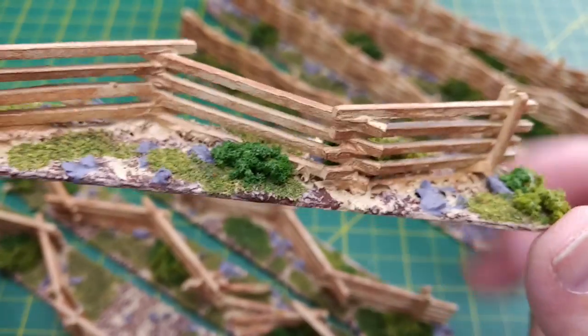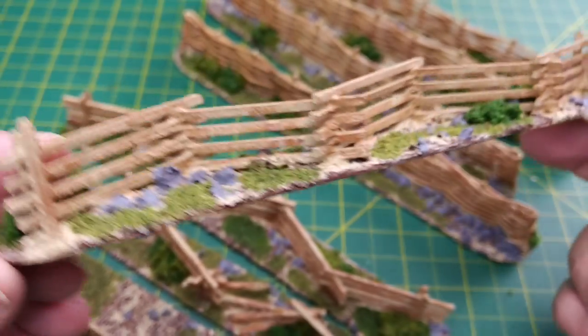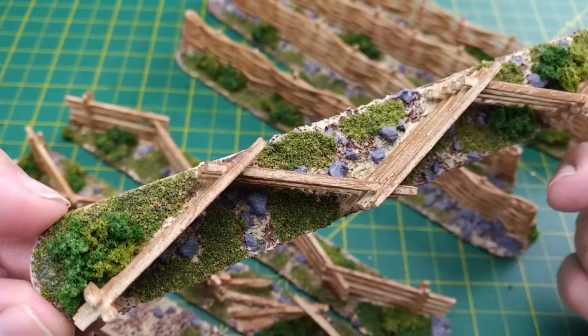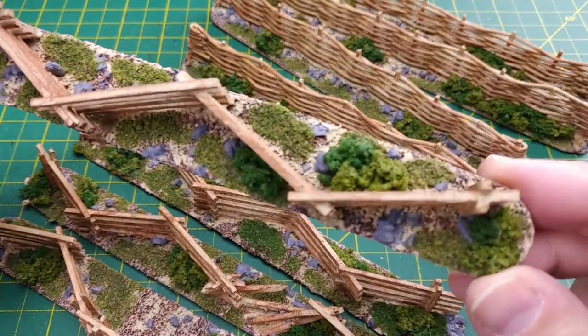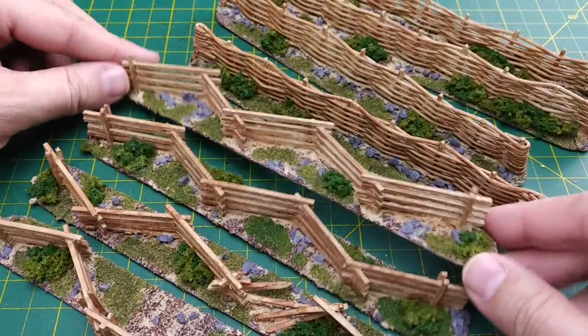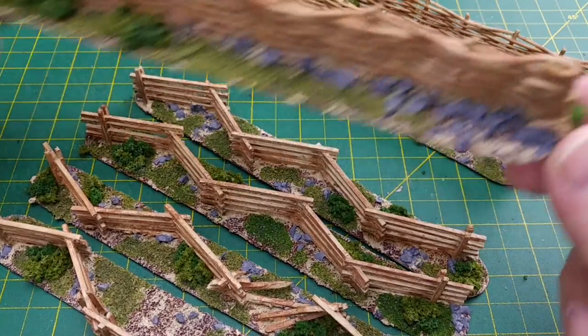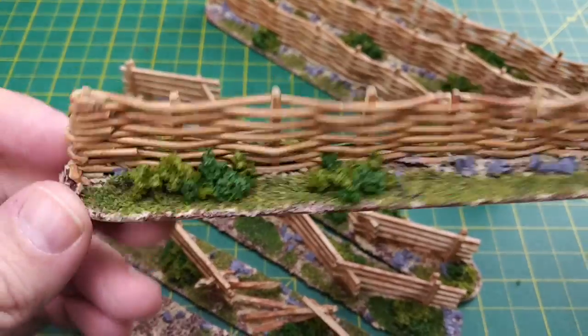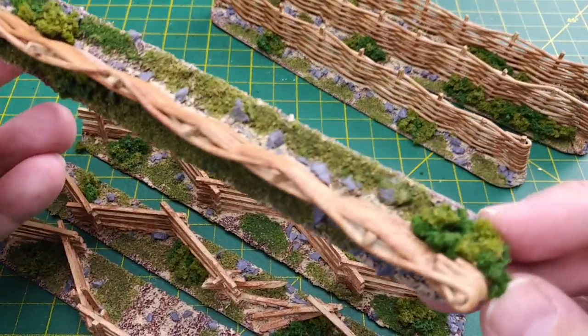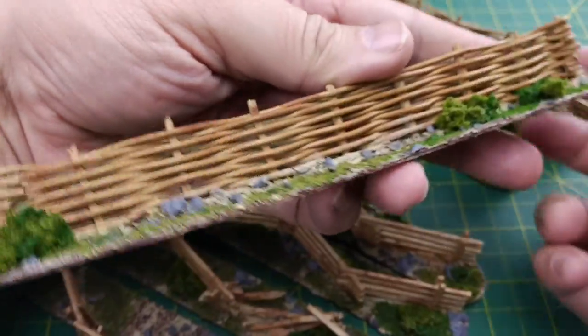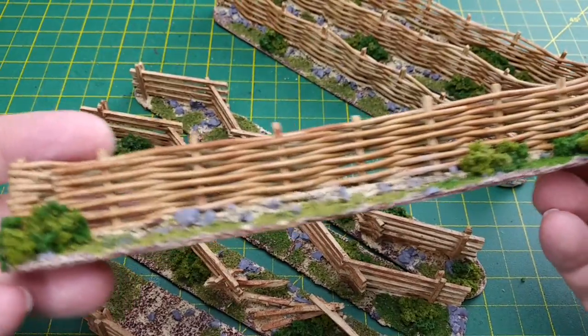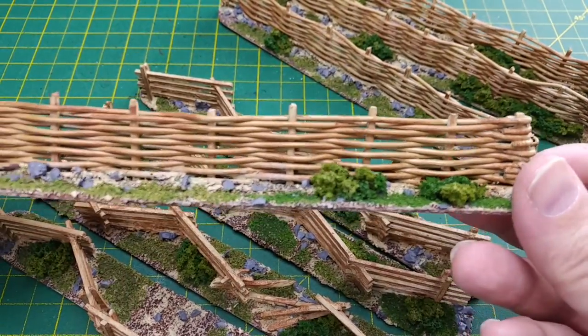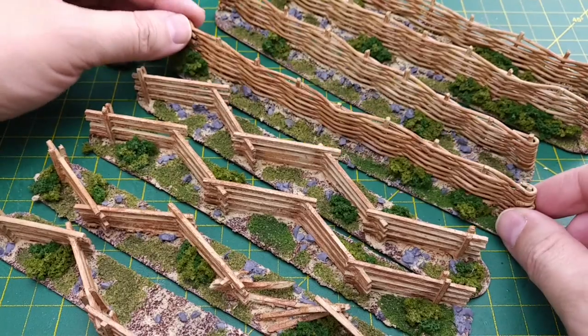Now that all our parts are dried, here we have our completed fences. I'm very happy with how these two varieties of fencing turned out. These fences will work well on the table for encounters in the late spring, summer, and early fall months. These can be used for an urban garden, animal pens, orchard fences, barriers along a country road, and so on. And I can definitely use them to create difficult terrain or block lines of sight.